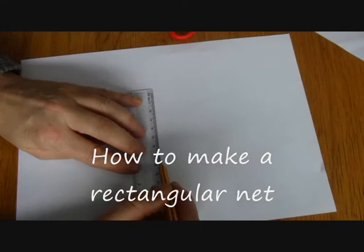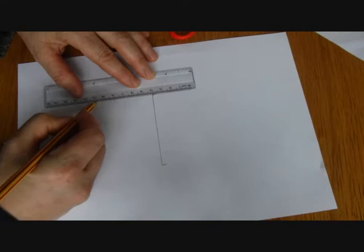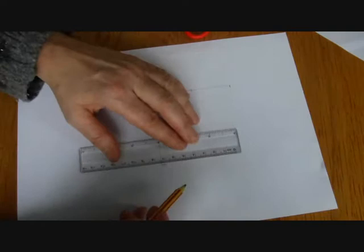To make rectangular buildings, you're going to make a net. So decide how big you want your box to be and measure one of those sides onto the paper. So mine I think was four centimeters by eight centimeters.